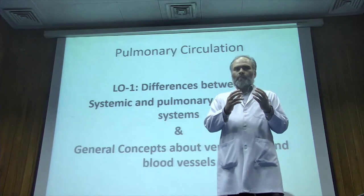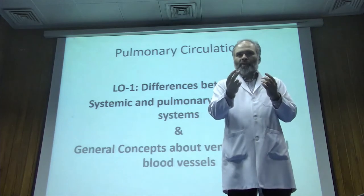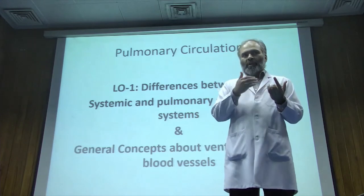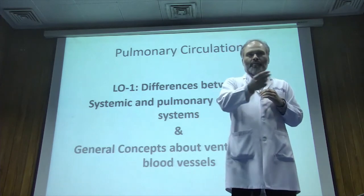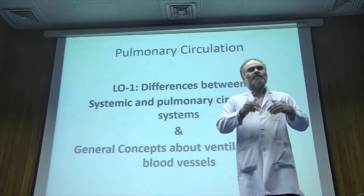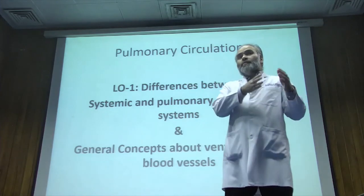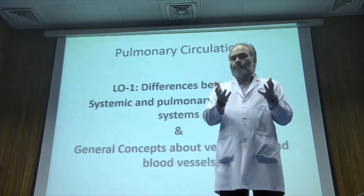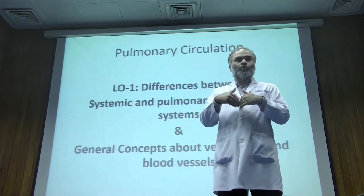They are in series — the right ventricle needs to work for the left to work. If the right stops, eventually the left will stop too, because the left receives blood from the lungs, which receives it from the right. So if the left ventricle pumps five liters per minute to the entire body, the right must provide that same five liters through the lungs to the left ventricle.